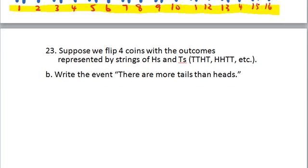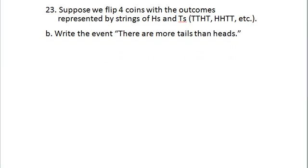The second part of this question says: suppose we flip the four coins again. Write the event that there are more tails than heads. An event is a set, so we need to list all outcomes where tails outnumber heads. Obviously, if you have all tails, you have more tails than heads. And if you have three tails, you also have more tails than heads.